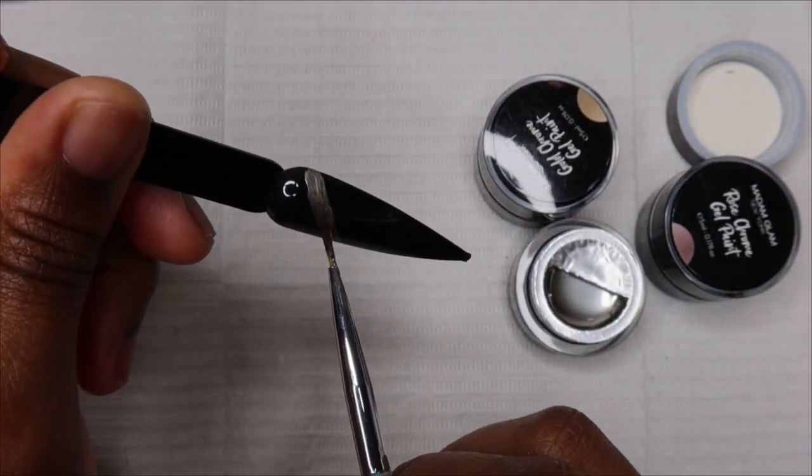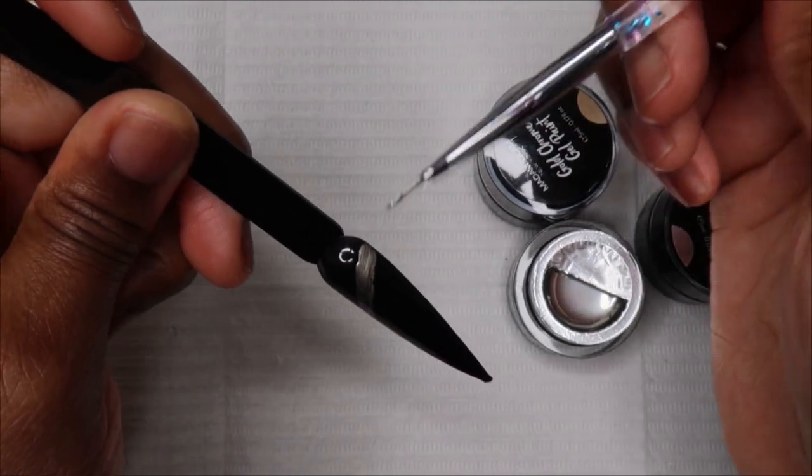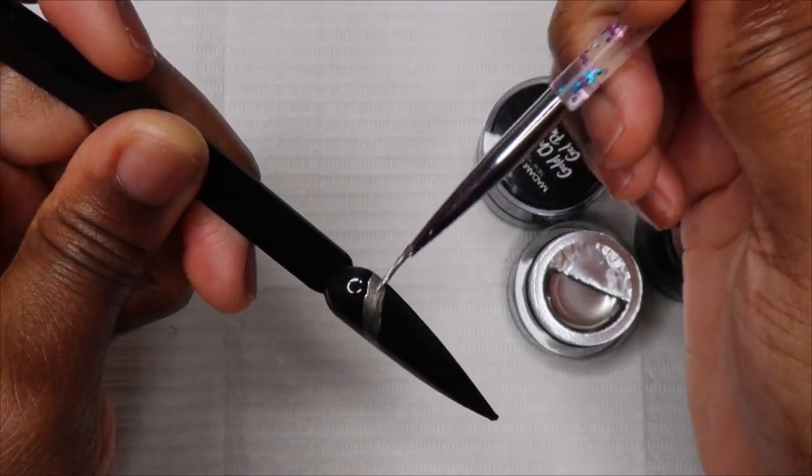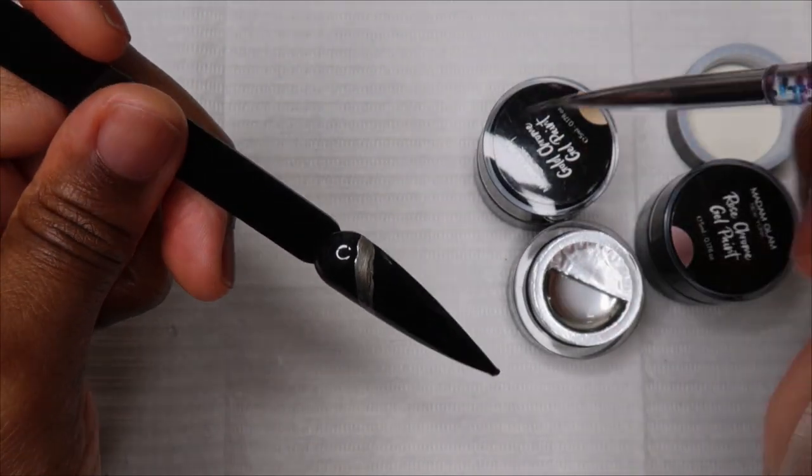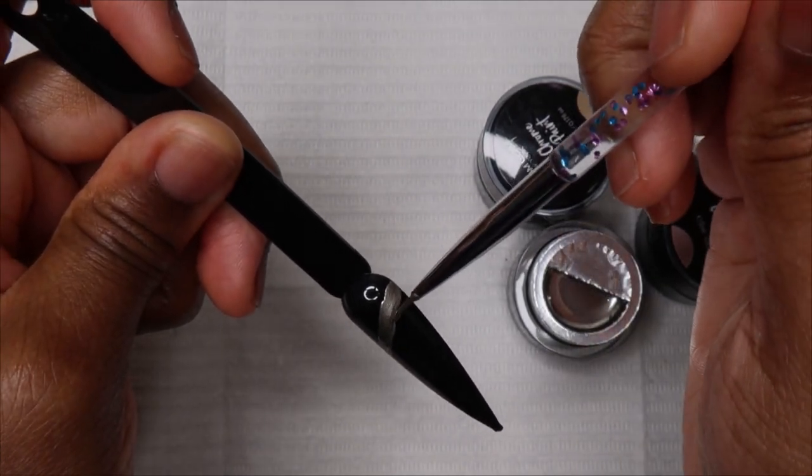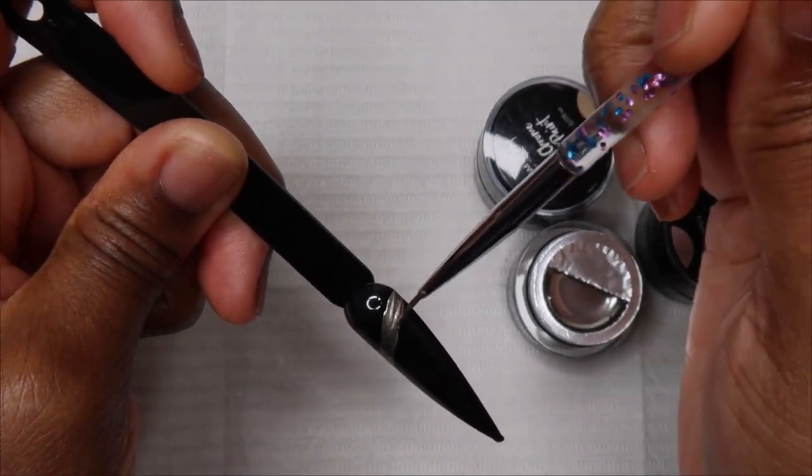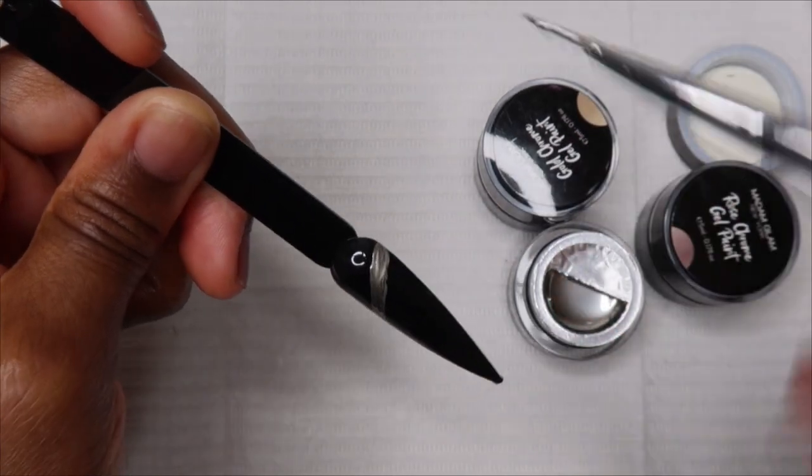With the silver chrome gel paint I know that once you cure it, if you go over it with a top coat you dull the shine. So I want to see if that's the same with these. It probably is, but I just want to check.